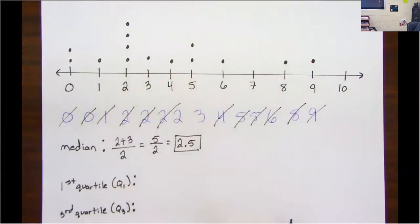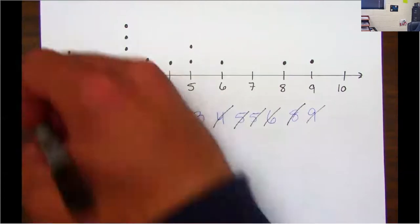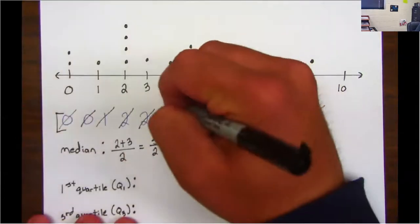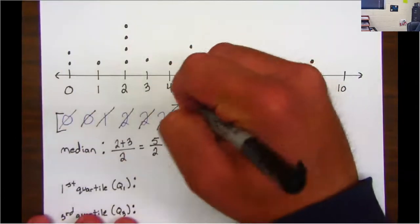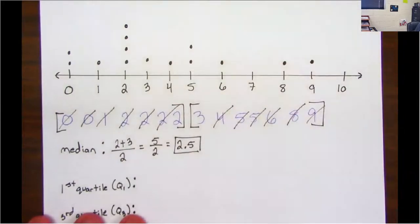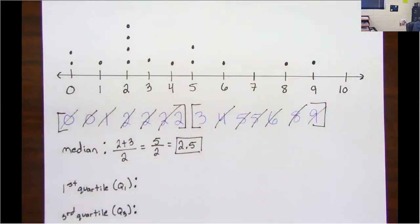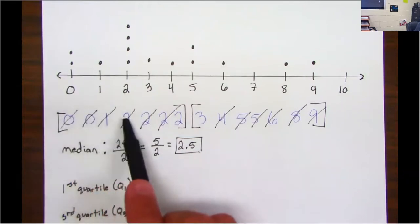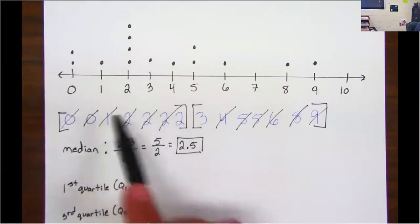Now we're going to bracket in our numbers. Remember, we're going to bracket in the first half of our data and then bracket in the second half of our data. Make sure in the brackets you have the same amount of numbers. Let's see, one two three four five six seven over here, one two three four five six seven over here.